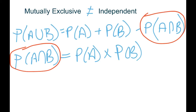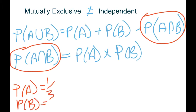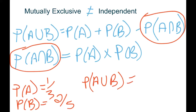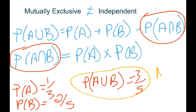When you get questions where they give you the probabilities, use the formulas to figure them out. For example: if P(A) = 1/3, P(B) = 2/5, and P(A or B) = 3/5, the question is — are they mutually exclusive? Mutually exclusive means no overlap, but because this one does have an overlap, they're not mutually exclusive.